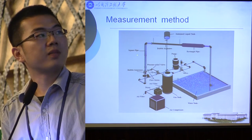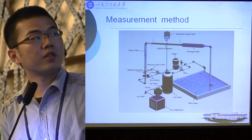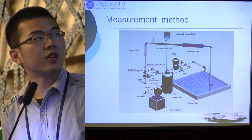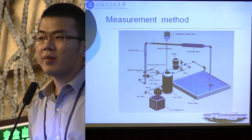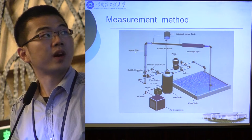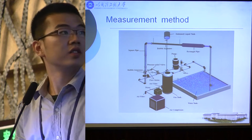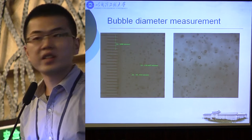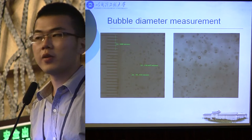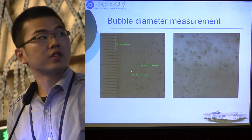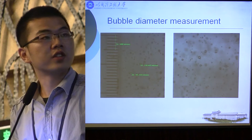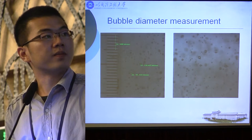So how to measure the bubble diameter? The bubble diameter produced by the generator was measured by taking photos at the outlet of the generator. In order to eliminate the spatial distortion of the round pipe, we used a square plexiglass pipe. Because the flow velocity is very high, we used a high-speed camera to take the bubble photos. The bubble diameter was measured by a powerful image processing software on the computer.